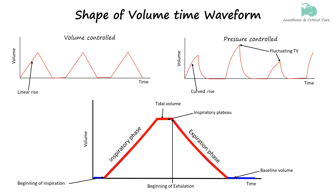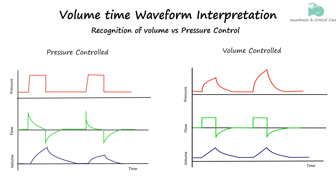Finally, the volume returns to the baseline. In mechanical ventilation, the control variable in a volume-time waveform can be recognized by observing the consistency and predictability of the waveform. If the waveform remains smooth and steady during inspiration, followed by a return to baseline during exhalation, it indicates that volume is the controlled variable.